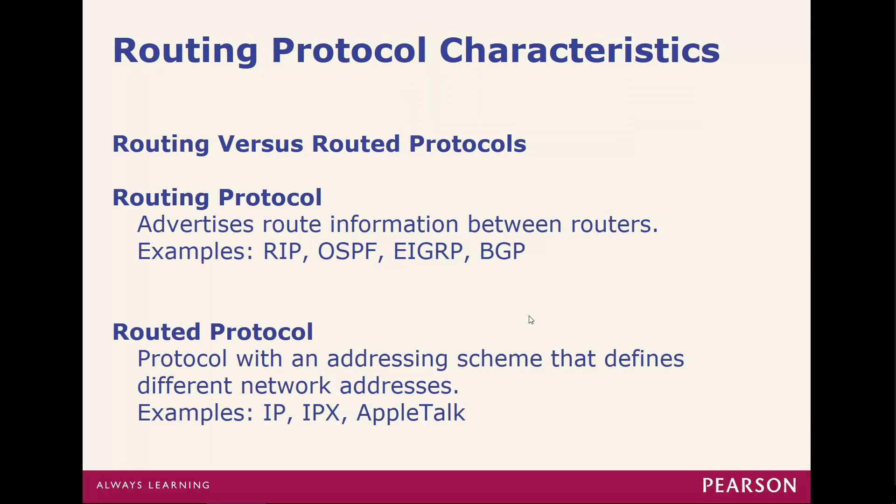Routing protocols come in two flavors: normally distance vector and link state. A routing protocol will advertise route information between routers — examples include RIP, OSPF, EIGRP, and BGP. Routed protocols are protocols with addressing schemes that define the different networks — that's going to be the addressing portion, like IP.